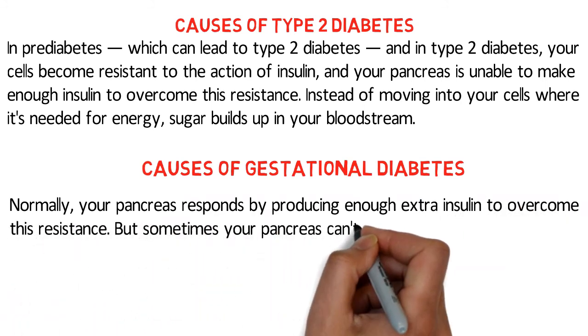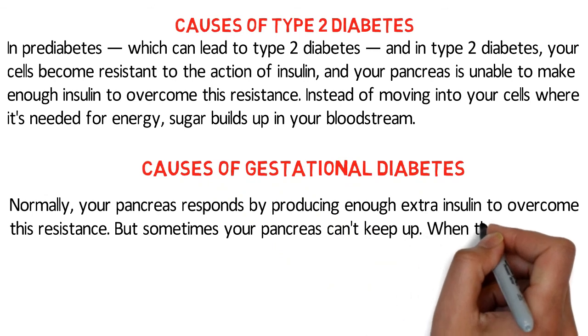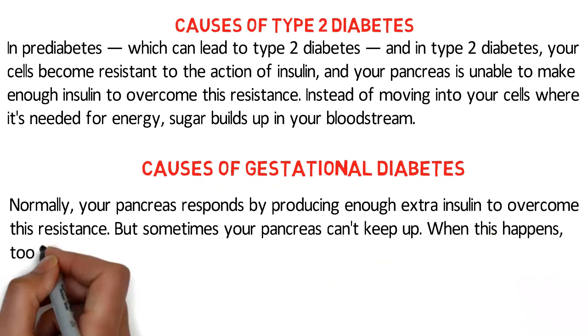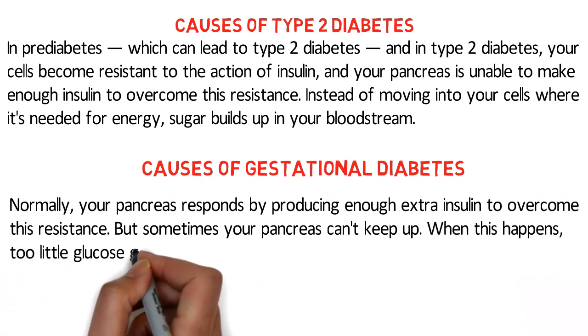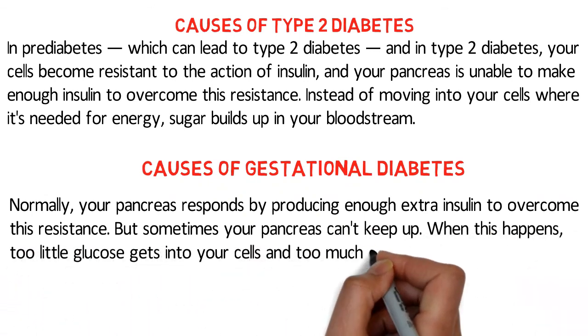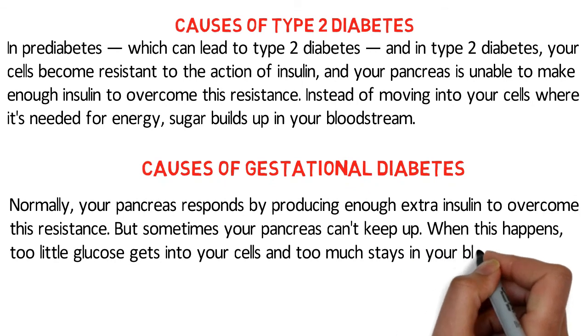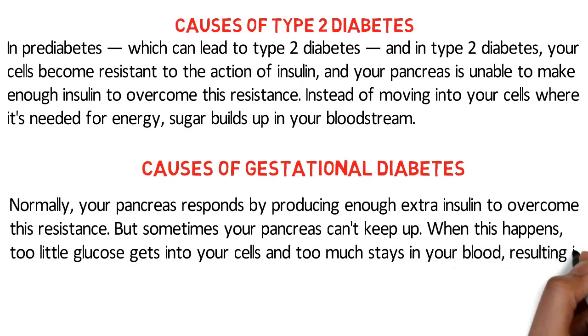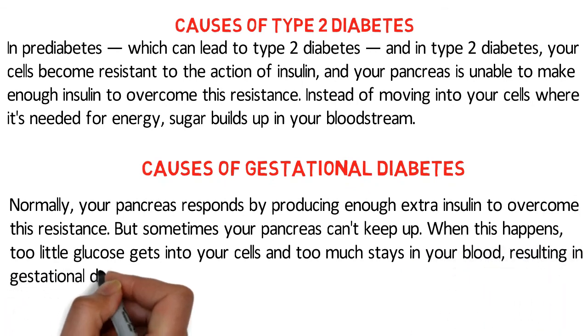Causes of gestational diabetes: normally your pancreas responds by producing enough extra insulin to overcome resistance, but sometimes your pancreas can't keep up. When this happens, too little glucose gets into your cells and too much stays in your blood, resulting in gestational diabetes.